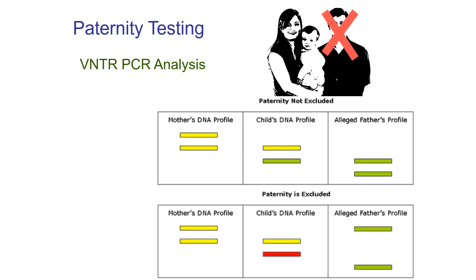Now let's take a look at a second example where the father is excluded. Again we have one band that definitely could have come from the mother, but the other band doesn't match anything the father has — and in that case we can definitely exclude the father.